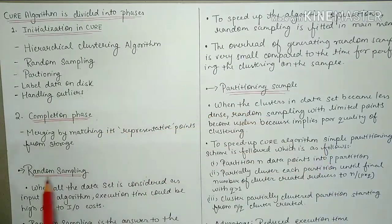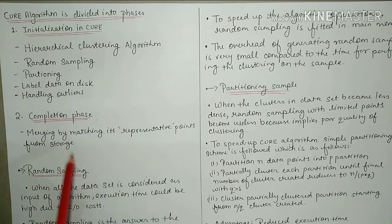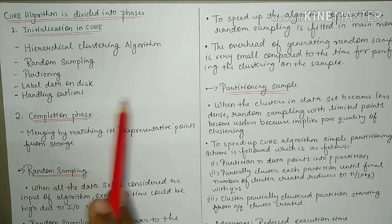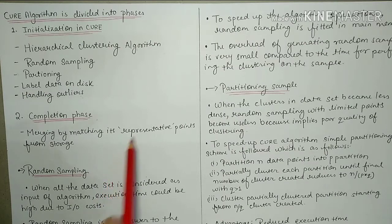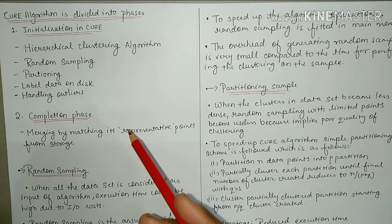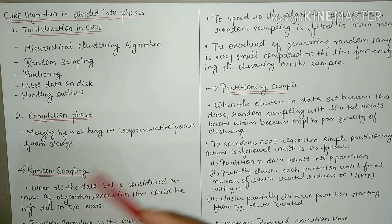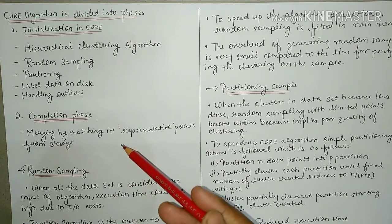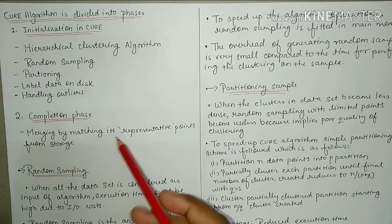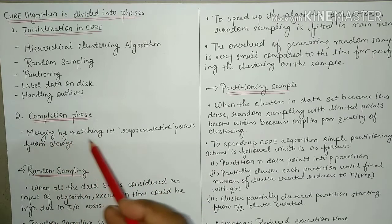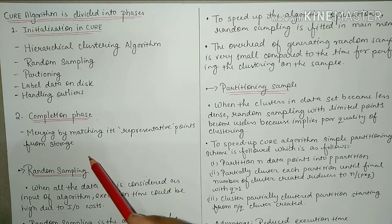Completion phase में, you have to merge clusters by matching their representative points from storage. जब बहुत सारे clusters हो जाएंगे, तो जिन clusters के representative points आस-पास हैं, उनको merge करना है. So, the Completion phase involves the merging of clusters by matching their representative points from storage.